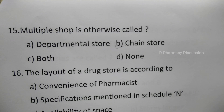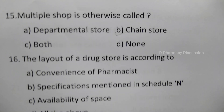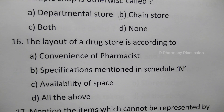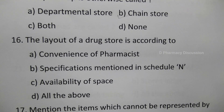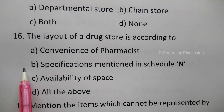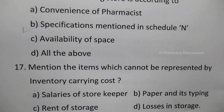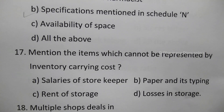Question 16: The layout of a drugstore is according to — option A: convenience of pharmacist, B: specifications mentioned in Schedule N, C: availability of space, D: all the above. The correct answer is option B, specifications mentioned in Schedule N.